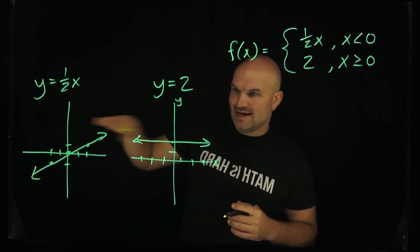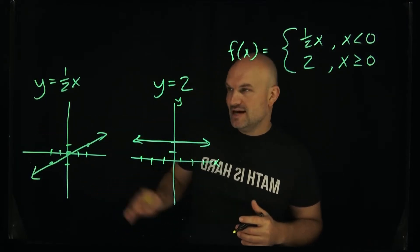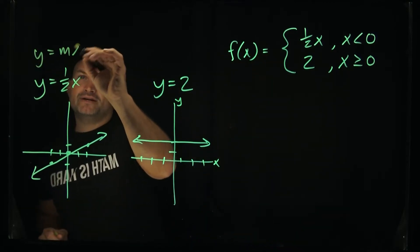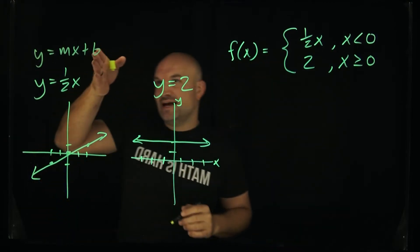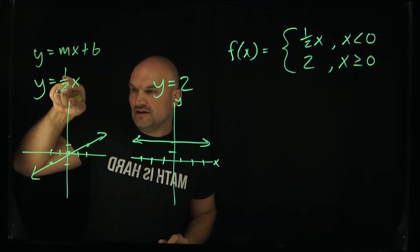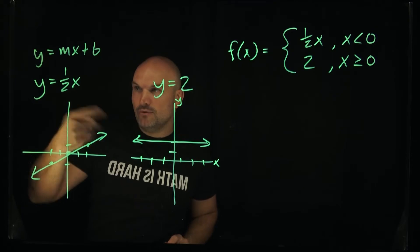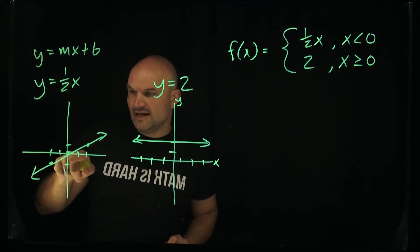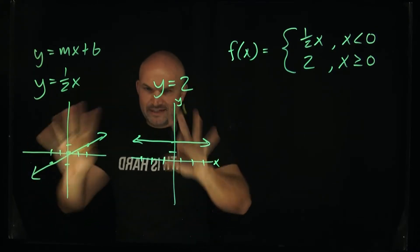So when you have y equal to a number that's just going to be a horizontal line, and then over here you could think about this like the slope intercept form. So we don't have a b so it's 0, so the graph is going to cross at 0 and then we're going to follow the slope to our points like up 1 over 2 or you can go in the negative direction negative 1 to left 2. So we have these two rules.